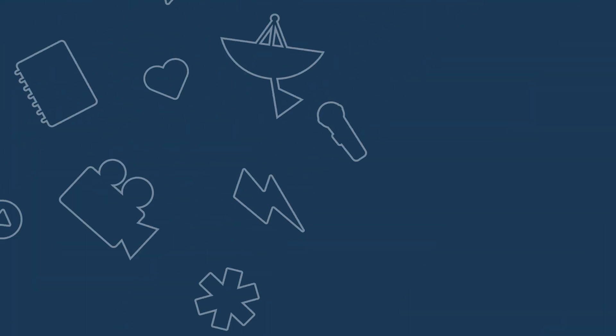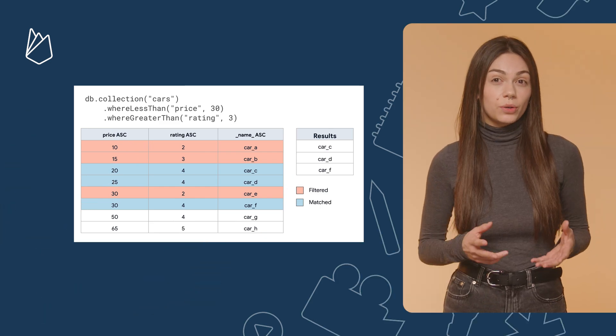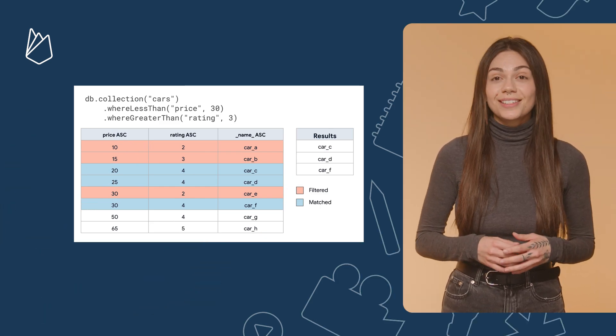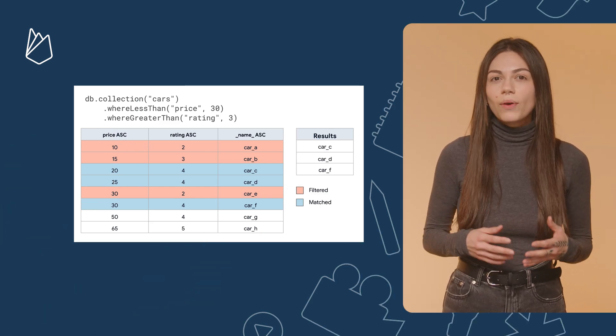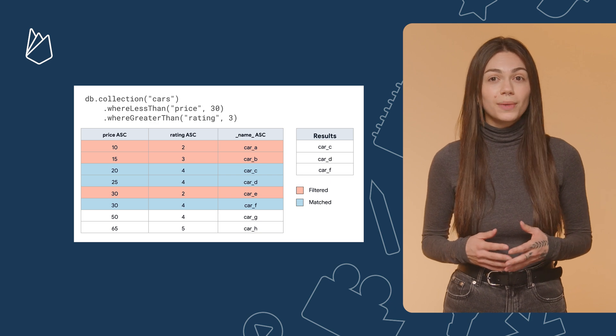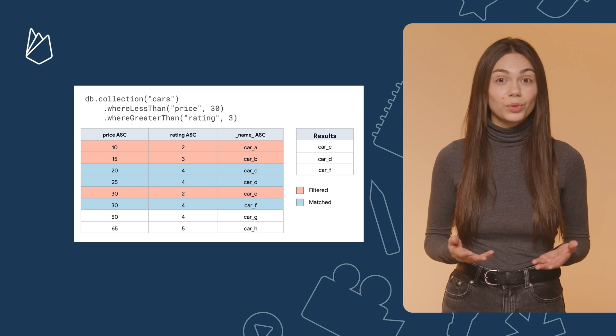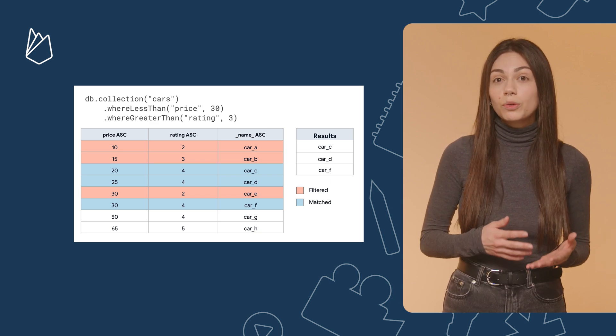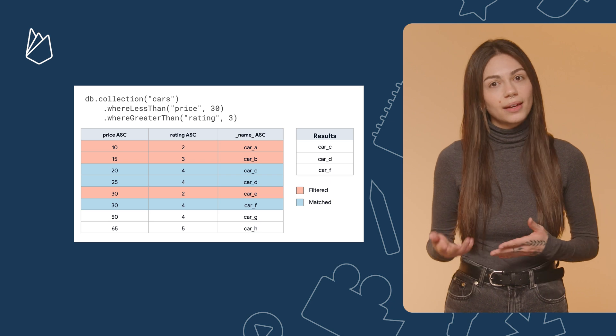For any query with up to one range or inequality condition, it would be able to jump straight to the starting point of the matching documents in the index, then return all results until it found the first one that no longer matched the conditions. It's a bit different now for these new queries. We now do index scans — the database may now have to scan index entries for documents that it does not return.